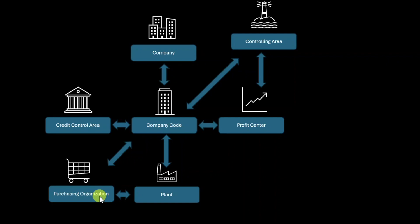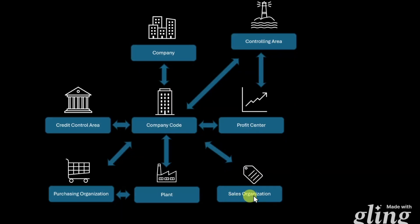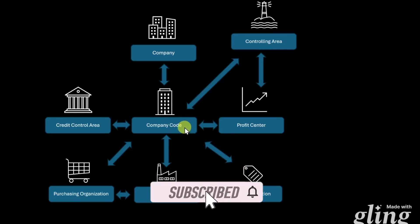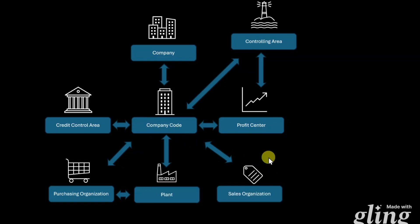Next, we have the so-called sales organization. This is the central organizational unit from our sales and distribution module, used for all of our sales processes. Such a sales organization can be assigned to one or even multiple company codes. Those are the main organizational units related to our company code. There are more special organizational units I will explain in other videos.